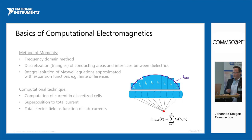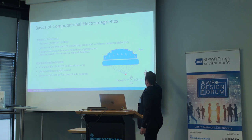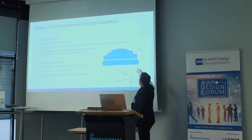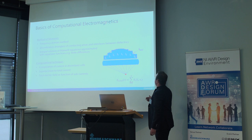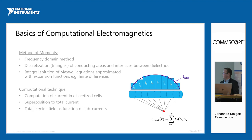Let's come to the computational technique. The computation of the current is done for each cell, and the total current is calculated by superposition of each of the cells, as demonstrated in the graph. The method of moments uses triangles, but the demo uses cylinders for simplicity. The current is calculated for each segment on a wire, and the total electrical field is computed from the contribution of every segment.